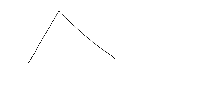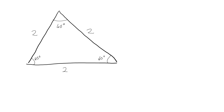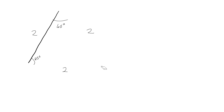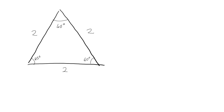To look at the 30-60-90 triangle, we're going to start by drawing an equilateral triangle. All angles are 60 degrees, and I'm going to make all sides equal to 2. Now I'm going to bisect this top angle, which splits it into 30 and 30.